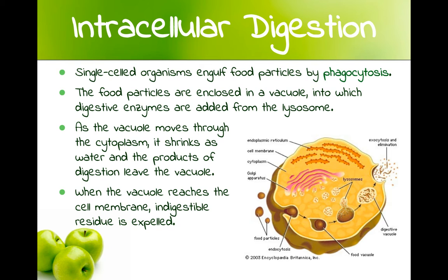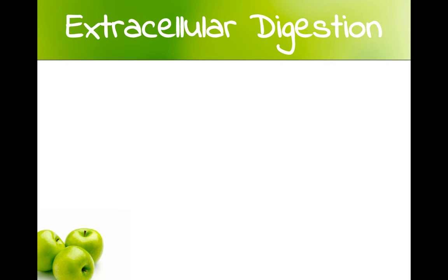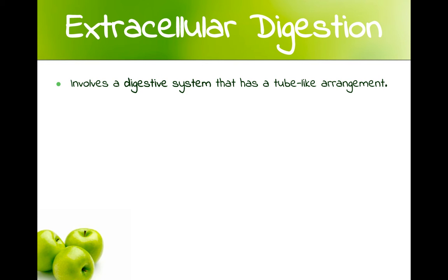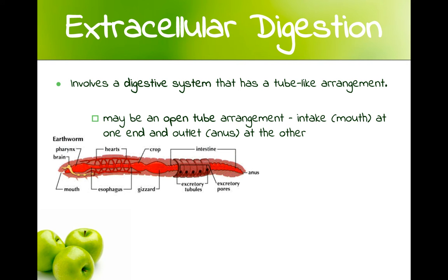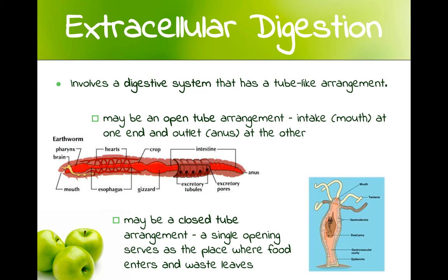When the vacuole gets to the membrane, it fuses with the membrane and expels anything that couldn't be digested. This is digestion within a cell. What humans and most organisms do is extracellular digestion. For extracellular digestion, you need a digestive system with a tube-like arrangement. It may be an open-tube arrangement with an intake at one end and an outlet at the other — shown in the diagram for an earthworm — or it may be a closed-tube arrangement with just one single opening where food comes in and waste goes out. More pleasantly, we have what is called an open-tube arrangement.